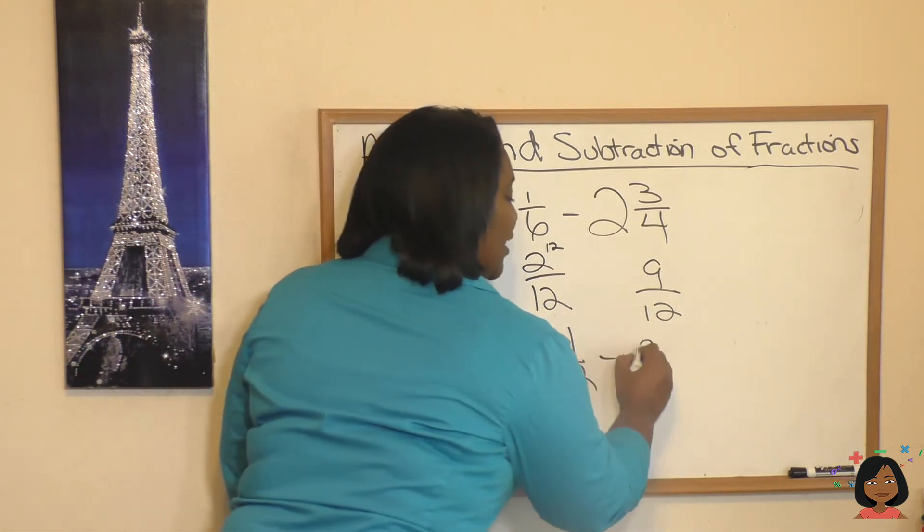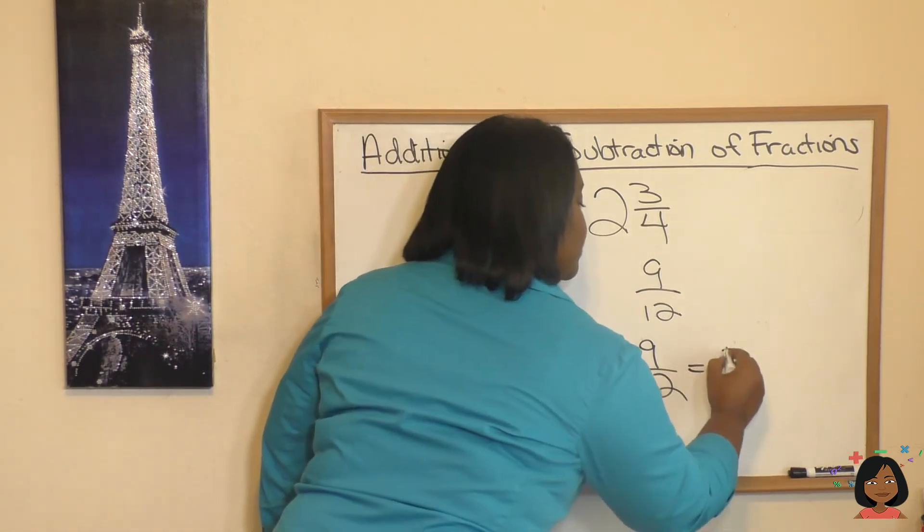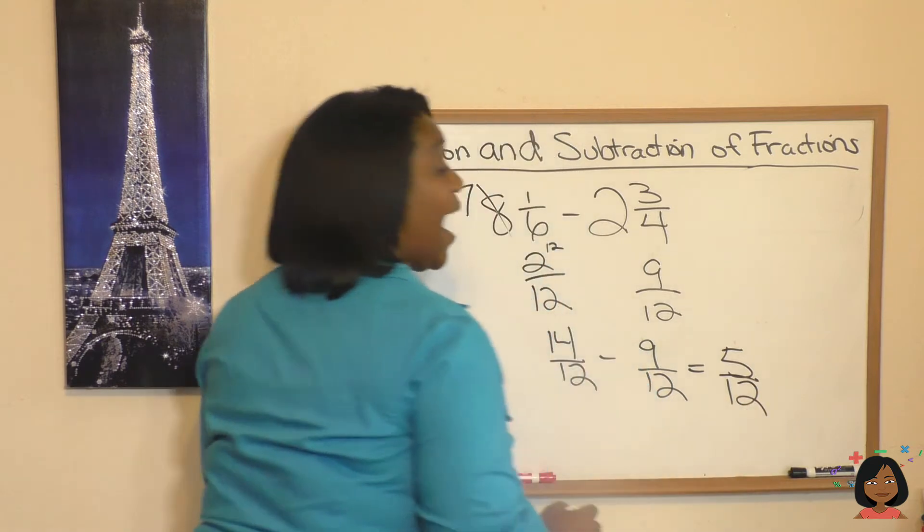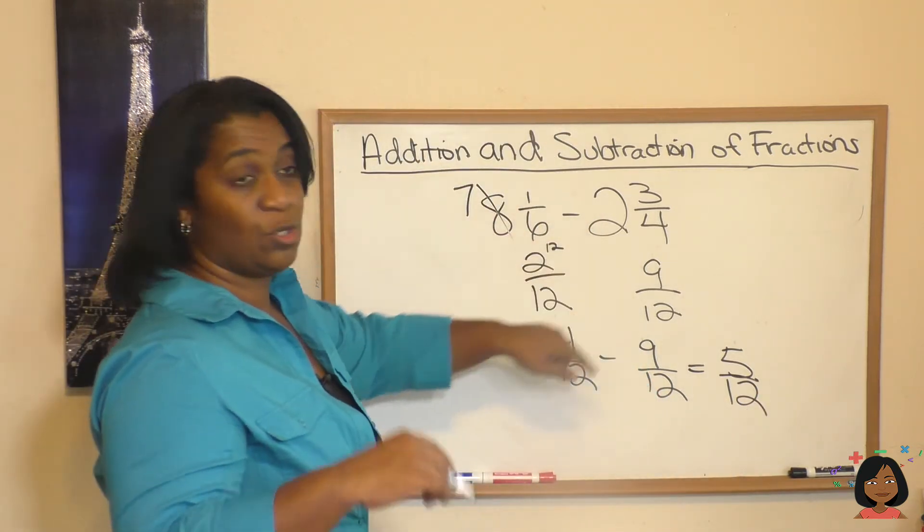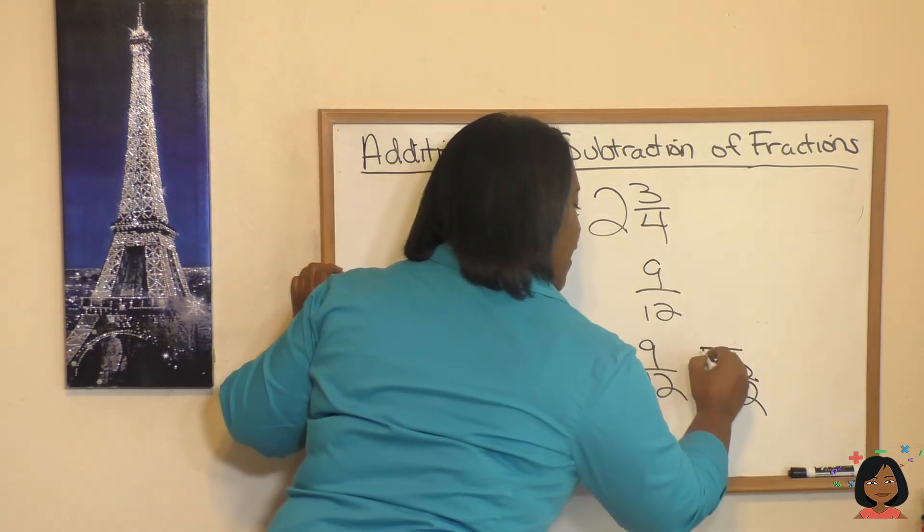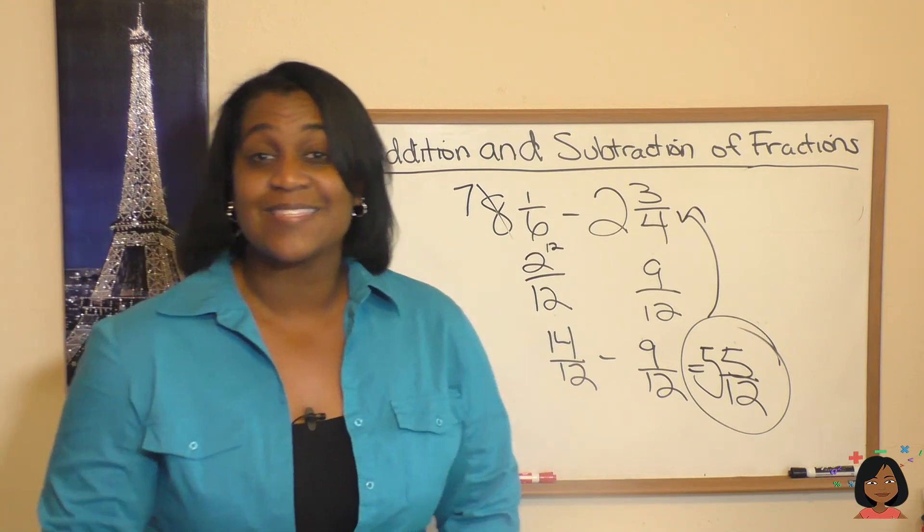Now I can do my subtraction. 14 minus 9 is 5 twelfths. And now we can go back and do the whole numbers. We have a 7 minus 2 is 5. So 5 and 5 twelfths is your answer. And that's it. That is your review of addition and subtraction of fractions.